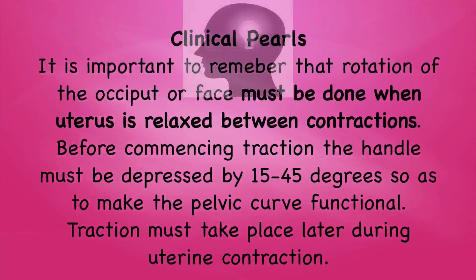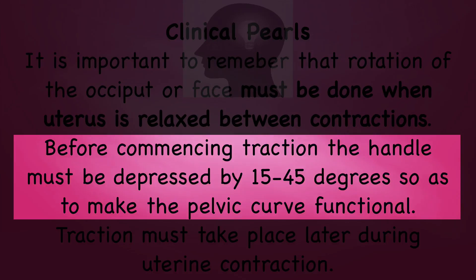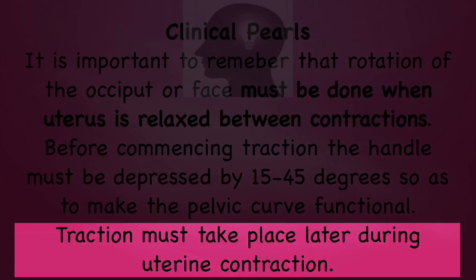Some clinical pearls. It is important to remember that rotation of the occiput or face must be done in between uterine contractions. Before commencing traction, the handle must be depressed by 30 to 45 degrees so as to make the pelvic curve functional. Traction must take place later during uterine contraction.